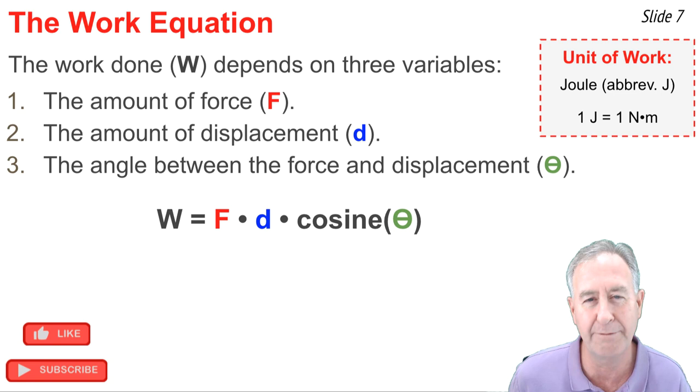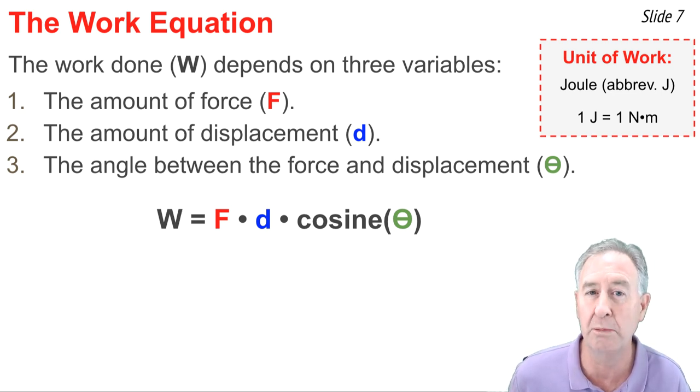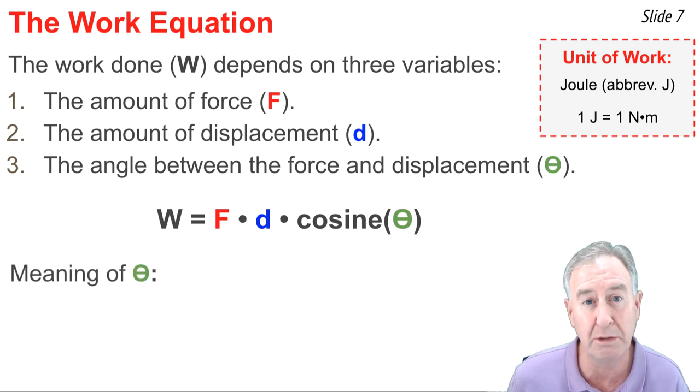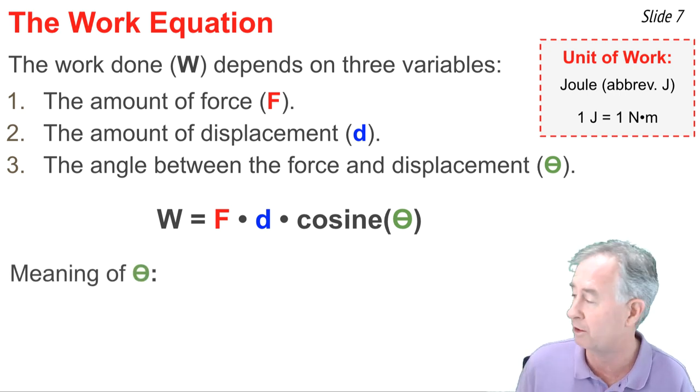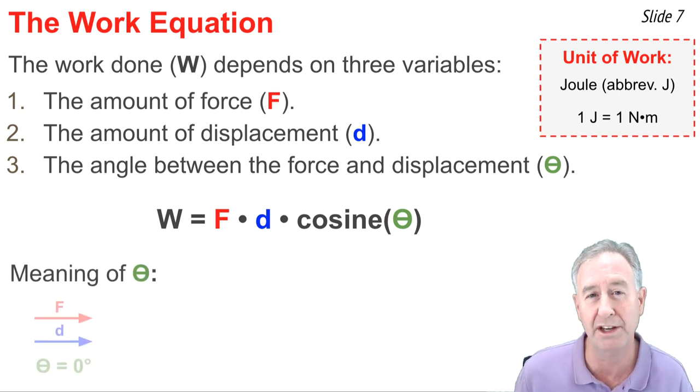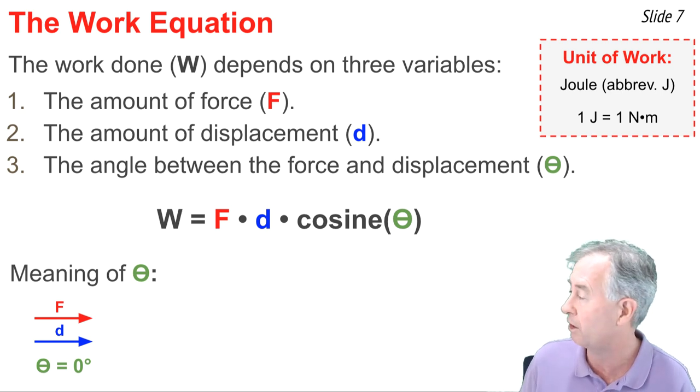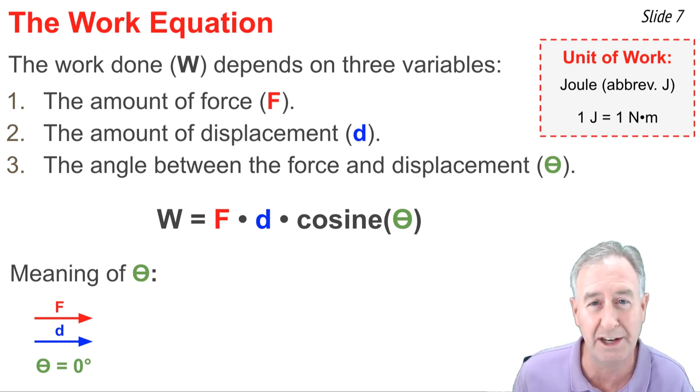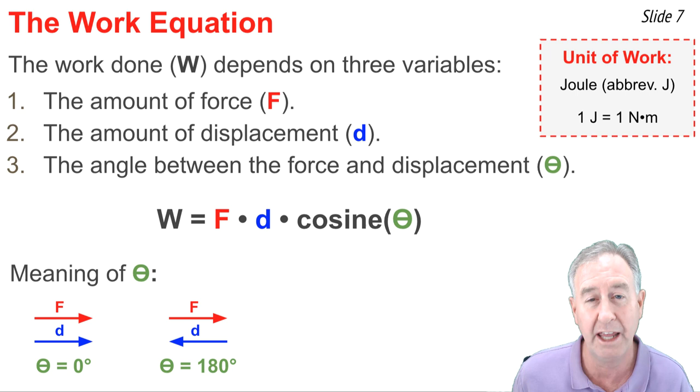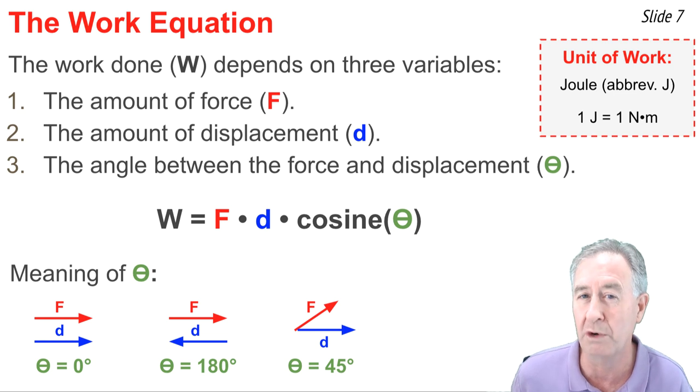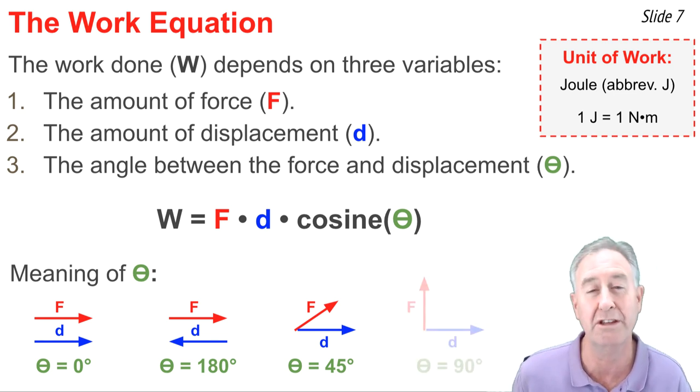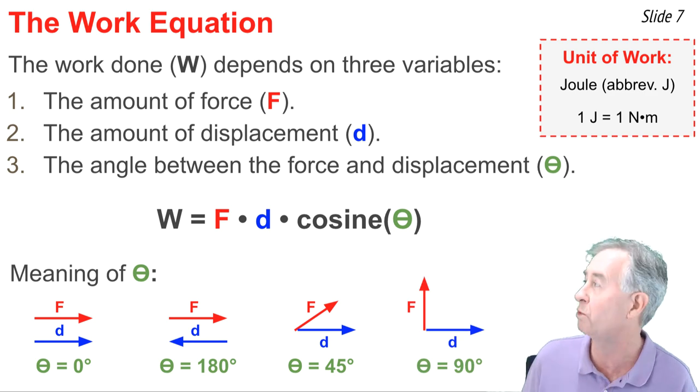The most complicated part of the equation is the angle theta. Theta is the angle between the force vector and the displacement vector. If these two vectors are in the same direction, then theta is zero degrees. If they are in opposite directions, then theta is 180 degrees. And if they're neither in the opposite or in the same direction, we simply measure the angle between the force and the displacement vectors, and that angle measurement gives us the measurement of theta in the work equation.